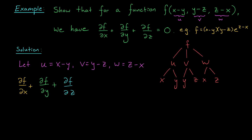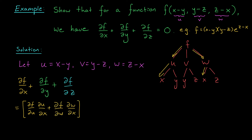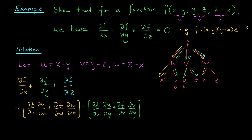We need to compute partial f by partial x plus partial f by partial y plus partial f by partial z. Starting with the partial with respect to x — we follow the branches down, taking derivatives as we go. We get partial f over partial u times partial u over partial x, plus partial f over partial w times partial w over partial x. Next, the partial derivative of f with respect to y — again two branches — giving partial f over partial u times partial u over partial y, plus partial f over partial v times partial v over partial y. Finally, the partial derivative with respect to z gives partial f over partial v times partial v over partial z, plus partial f over partial w times partial w over partial z.